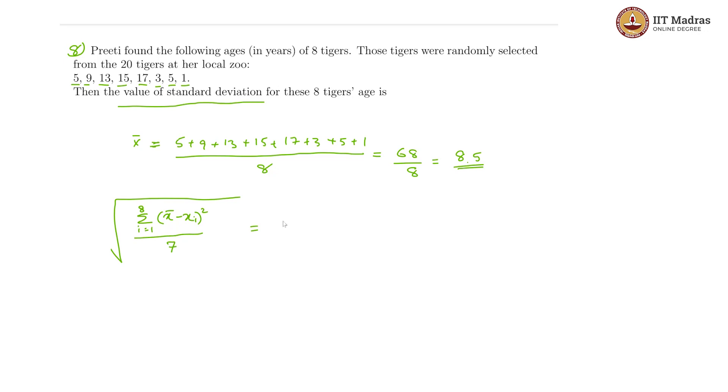So this we will get as square root of the whole thing 1 by 7. Now we will get 3.5 square plus 0.5 square plus 4.5 square plus 6.5 square plus 8.5 square plus 5.5 square plus 3.5 square plus 7.5 square.